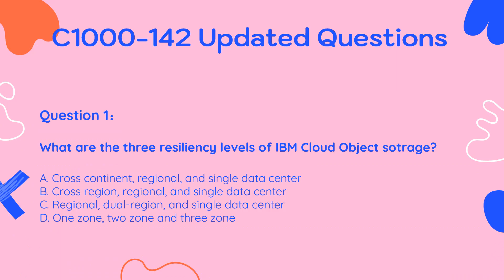Question 1. What are the three resiliency levels of IBM Cloud Object Storage? A. Cross-continent, regional, and single data center. B. Cross-region, regional, and single data center. C. Regional, dual region, and single data center. D. One zone, two zone, and three zone.